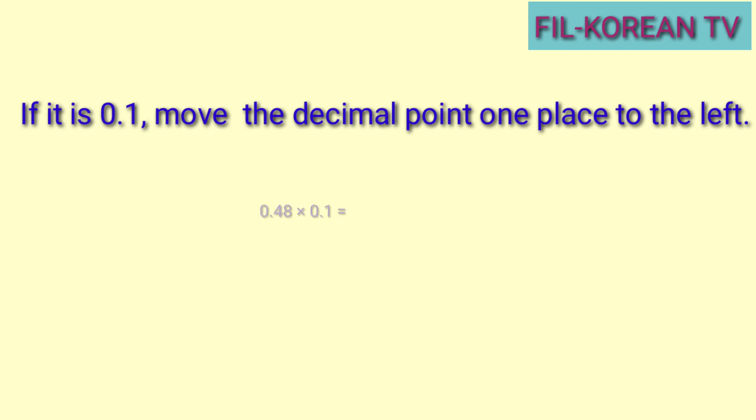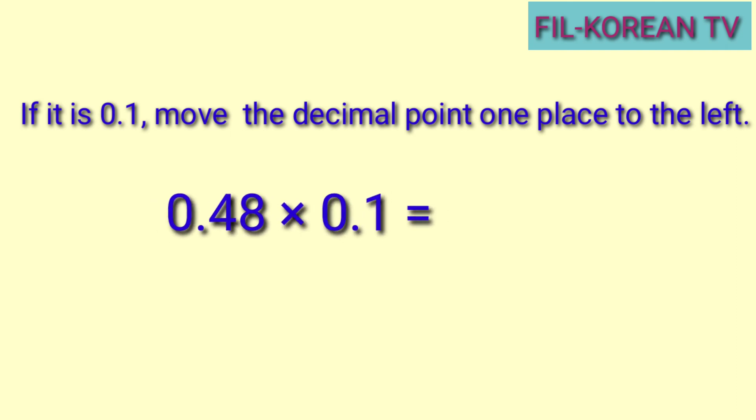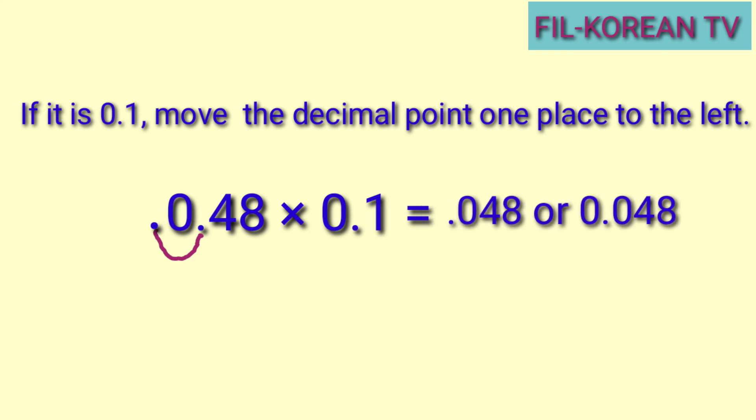Okay, let's have an example. Forty-eight-hundredths times one-tenth. Ang gagawin lang natin ay i-move natin itong decimal point ng forty-eight-hundredths ng one place to the left — i-move natin one. At dito natin ilalagay ang decimal point. The answer is forty-eight-thousandths.